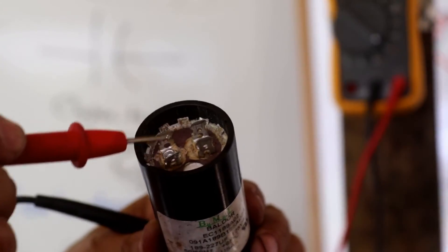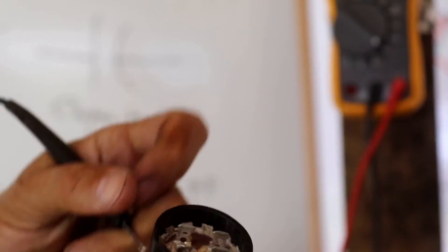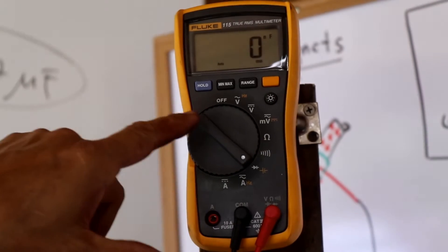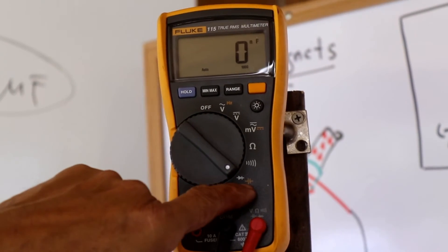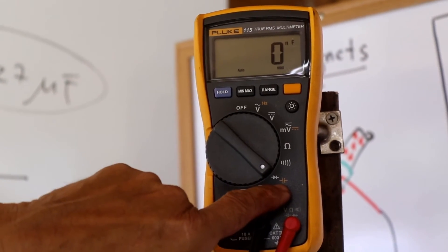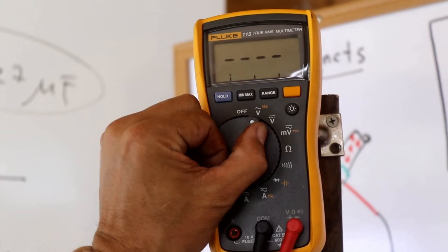After I discharge the capacitor with a piece of wire in between those terminals I can check. I select my multimeter in capacitors. Let me explain the procedure.